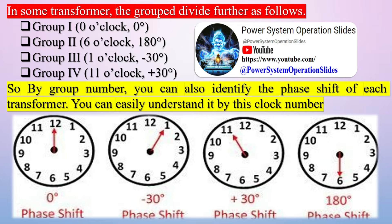When two transformers are connected in parallel, their phase shifts must be identical. If not, a short circuit will occur when the transformers are energized.